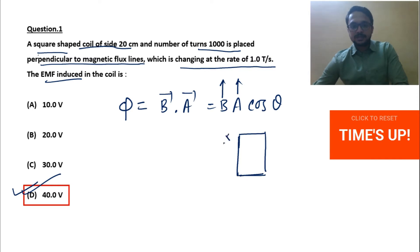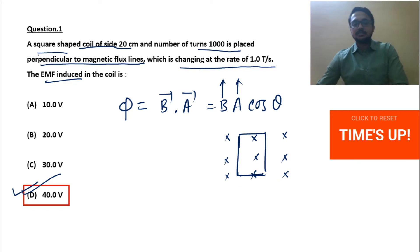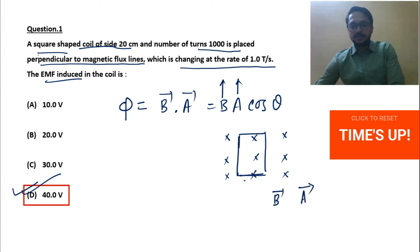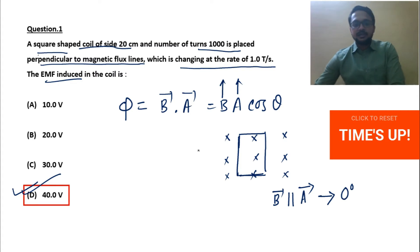Magnetic field lines are perpendicular, meaning going perpendicularly inward — cross marks represent perpendicularly inward. For this loop, the area vector becomes perpendicular to the loop, meaning perpendicular to this board. So we can consider that the magnetic field vector B and the area vector A are parallel — B parallel to A means θ equals zero degrees. So here BA cosθ means we simply get BA.